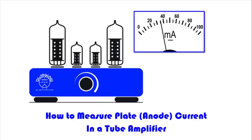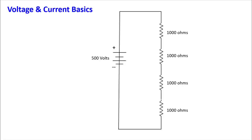In the event you've ever wanted to know how to measure the plate current, otherwise known as anode current, in a tube amplifier, stay tuned. We've got a couple of voltage and current basics we need to understand to do this successfully.